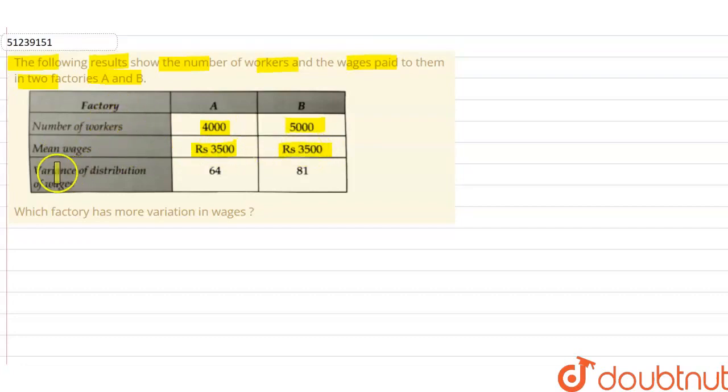In factory A, the variance of distribution of wages is 64 and in B, it is 81. Which factory has more variation in wages?